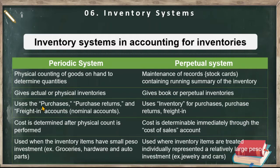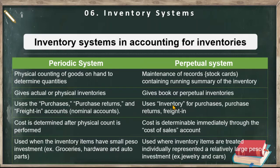For the periodic system, it uses the terms: purchases, purchase returns, and freight in accounts. Meanwhile, the perpetual system uses the inventory account for purchases, purchase returns, freight in, and purchase discounts. So those terms — purchases, purchase returns, purchase allowance, purchase discounts — instead of those, the inventory account is used. Also for freight in, the inventory account is used.